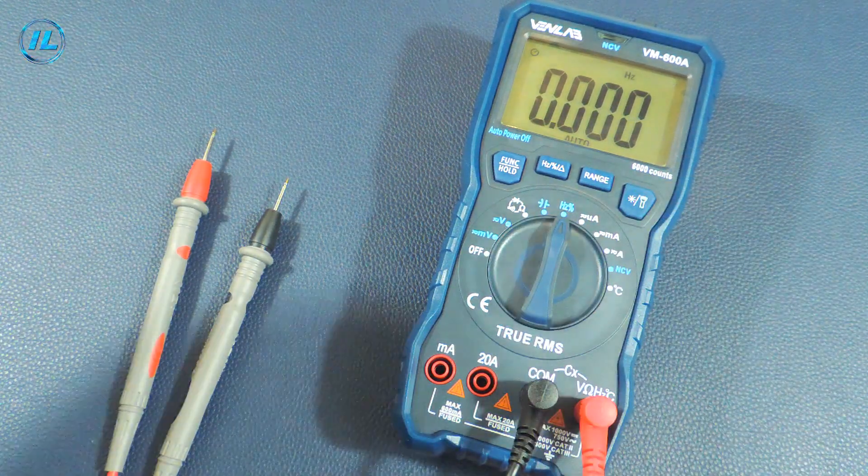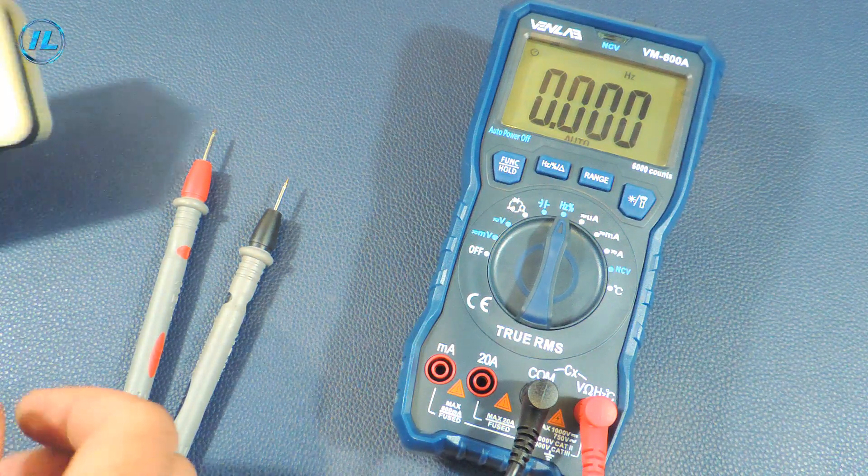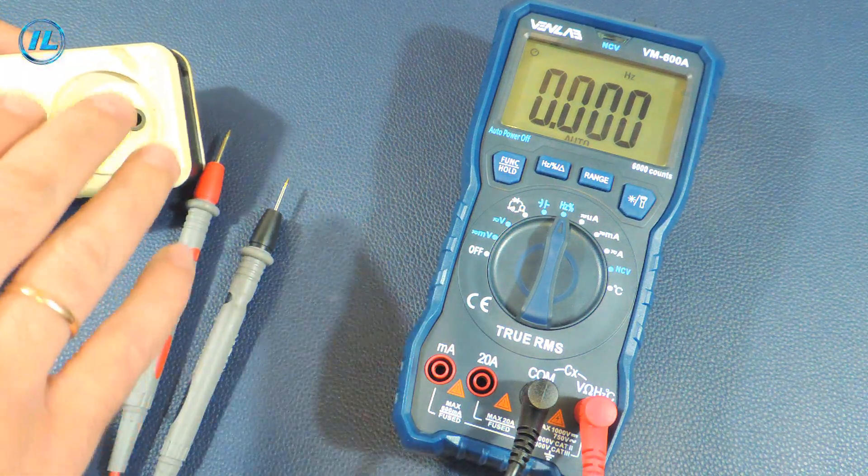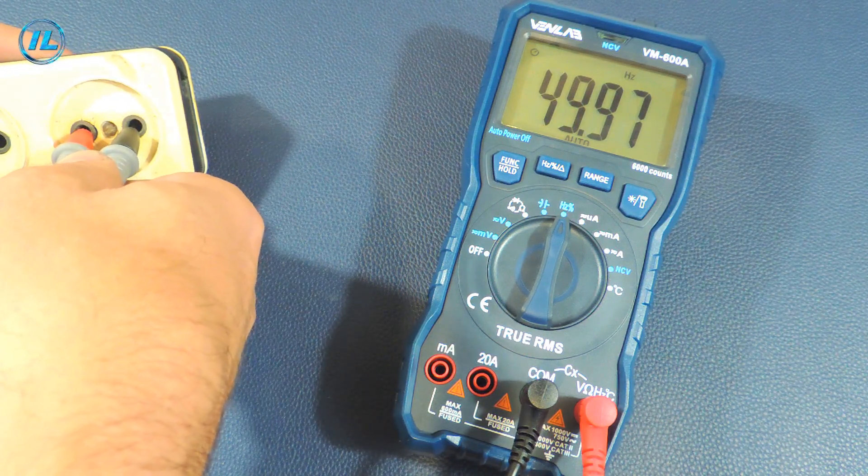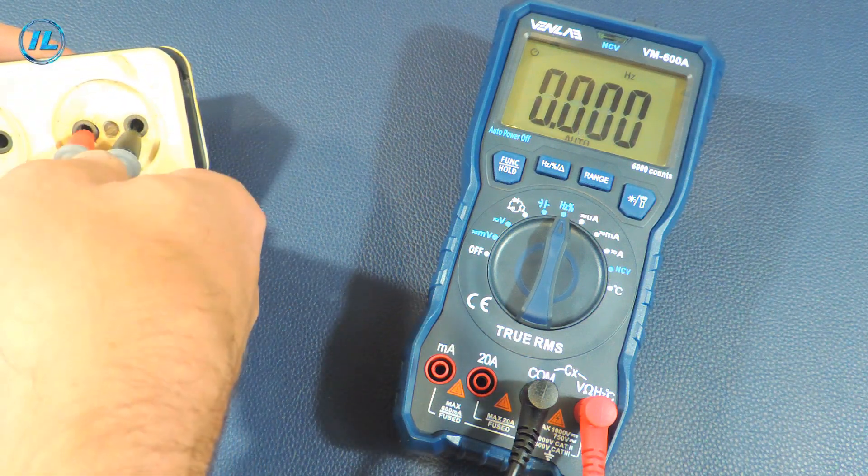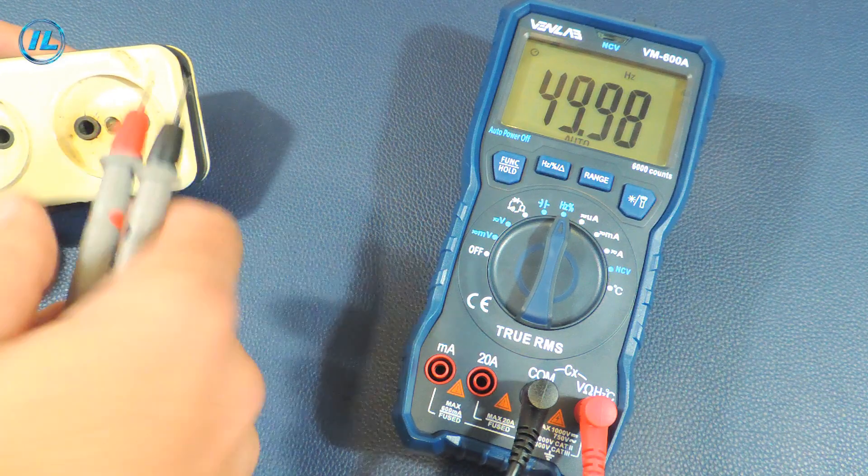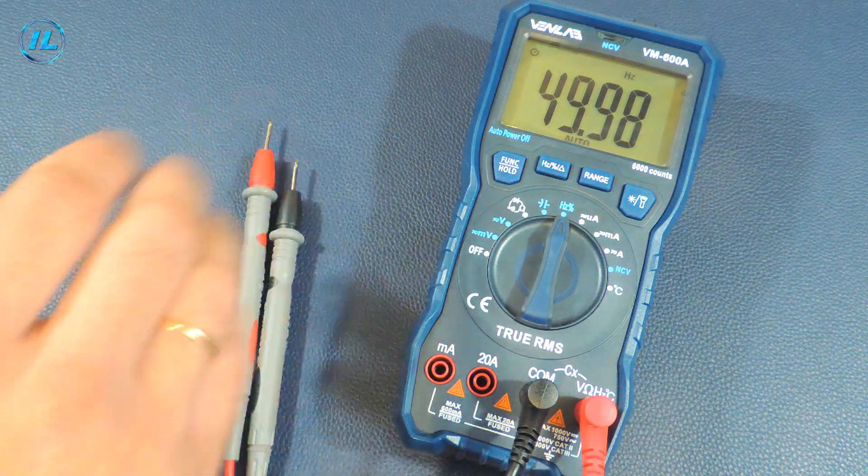The next mode is frequency measurement. As an example I measure the frequency of the electrical network. 50 hertz. Everything is fast and accurate. This mode works very well in the multimeter.